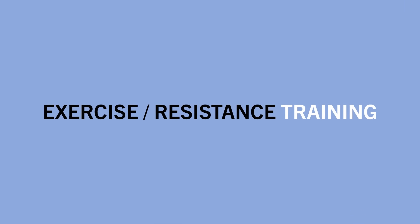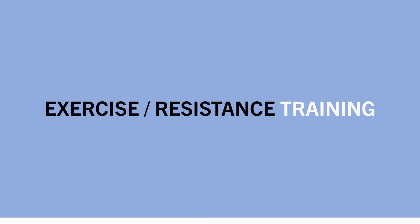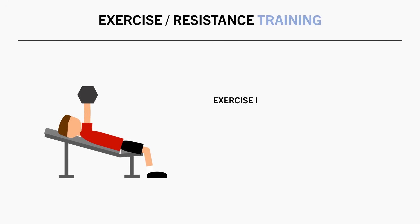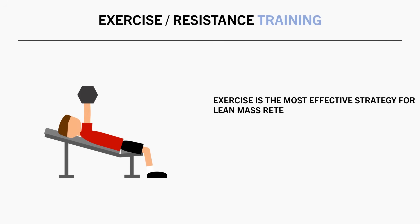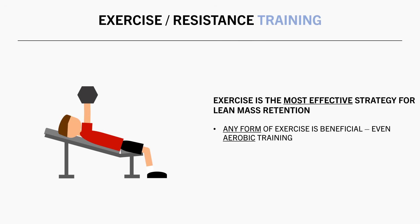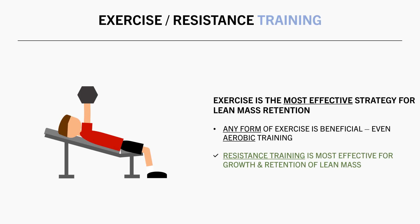The first and by far most important strategy is exercise. Unlike weight loss, exercise is far more important for lean mass adaptations rather than any diet strategy. Basically any form of exercise during weight loss is going to improve lean mass retention. Even aerobic exercise can mitigate lean mass losses during weight loss. However, resistance training in particular is going to be most effective for building and retaining lean mass.